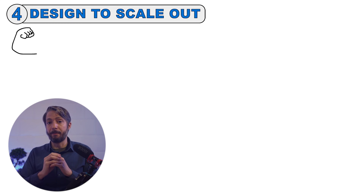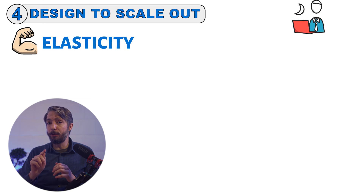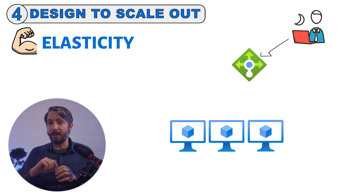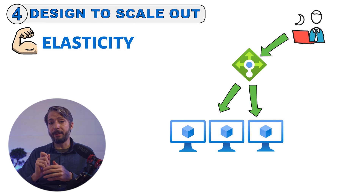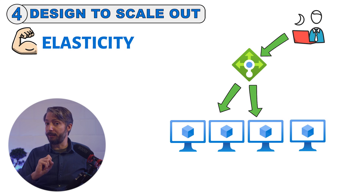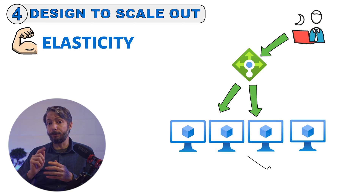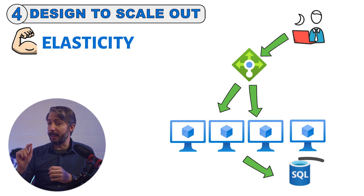This leads into our fourth point: design to scale out. The power of the cloud is the elasticity where you can scale based on demand. You should avoid stickiness, meaning that requests from the client should not always be routed to the same server — this way you can more easily scale horizontally and have more servers handle the client load. I recommend using the built-in Azure auto-scaling features where they are available, not only for scale-out but also for scale-in. Keep in mind that it's also important to continuously identify bottlenecks — scaling out may not fix all issues if the back-end database is actually the bottleneck.